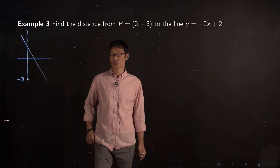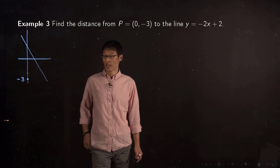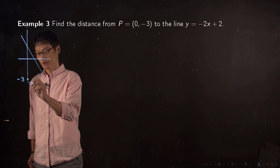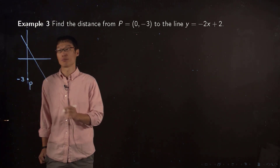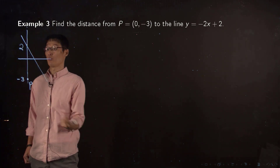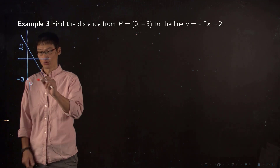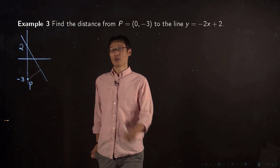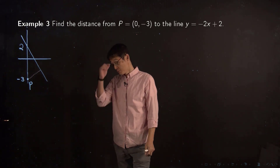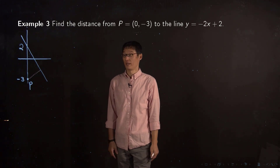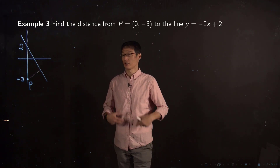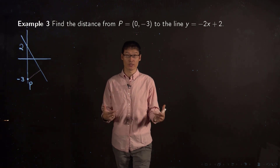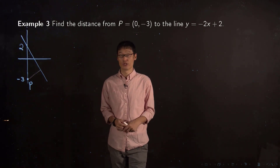Example 3 is about distance between a point and a line. Point P is (0, -3), and we have a line y = -2x + 2, which has slope -2 and y-intercept 2. The distance between the two points is what we want to find. This is one problem from the first midterm exam. We have studied vector projection or scalar projection to find this distance, and we can also use our technique of maximum and minimum.